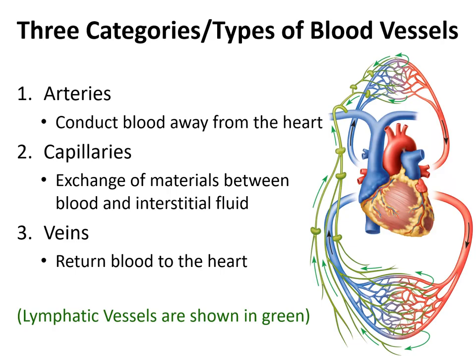To part one: the types of vessels. There are three types of blood vessels found in the body: arteries, capillaries, and veins. The diagram on this slide also shows another type of vessel, but this vessel does not carry blood. Rather, it carries lymphatic fluid, and it's shown in green.